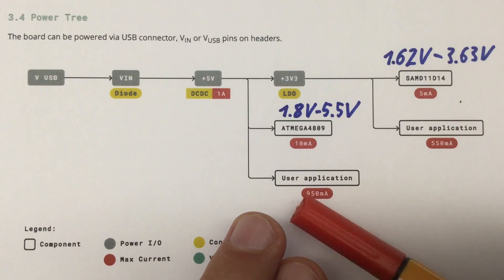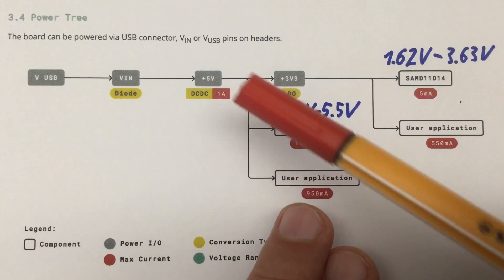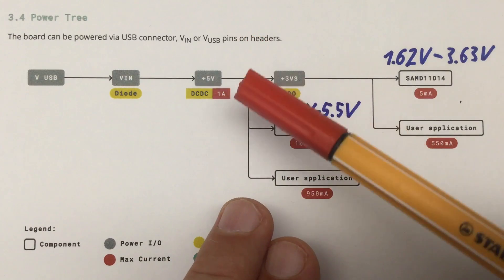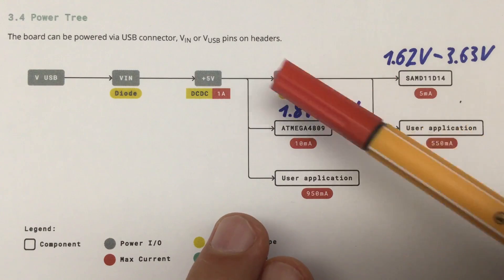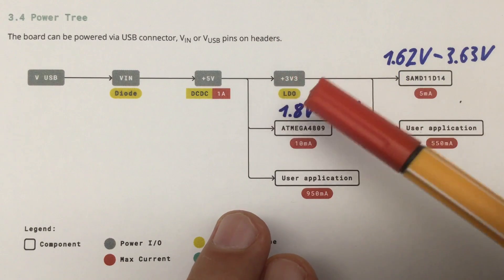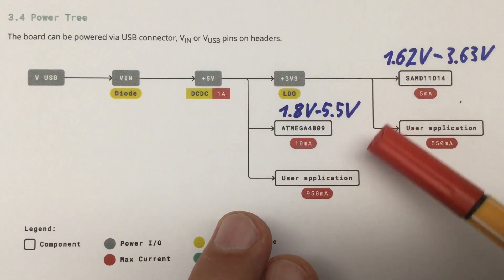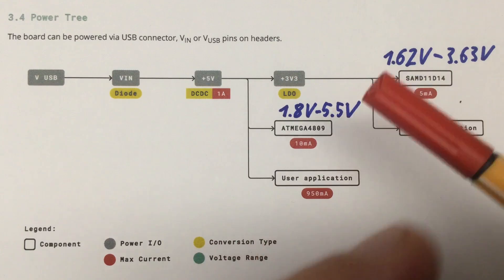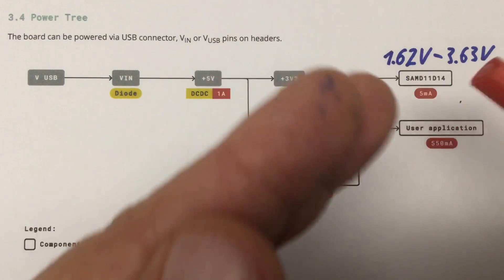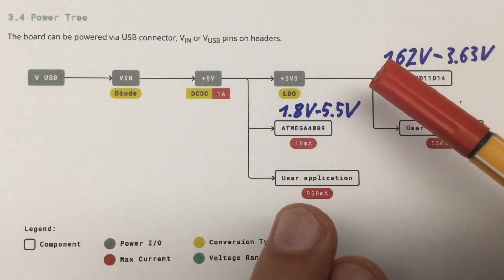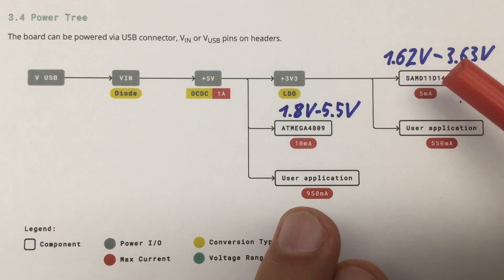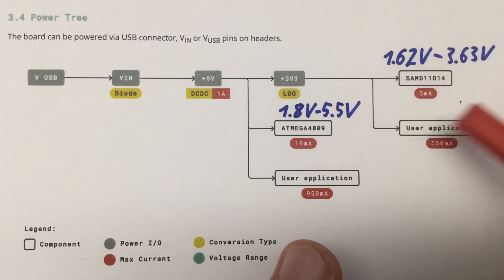Of course you have the 5 volts available on a pin for use application up to 950 milliamps. Remember that can only deliver 1 amp anyway. The 5 volt rail also goes into a 3.3 volt low dropout linear regulator, and that gives us our 3.3 volt rail, which supplies the SAMD11 D14, which is happy with a voltage range between 1.62 volts to 3.63 volts.